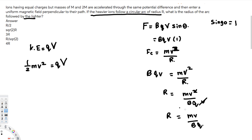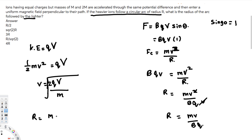Now we need to connect R and M, so let's substitute the velocity. From the energy equation, velocity equals the square root of 2QV over m. We replace v in the radius equation, giving R equals m over BQ times the square root of 2QV over m.